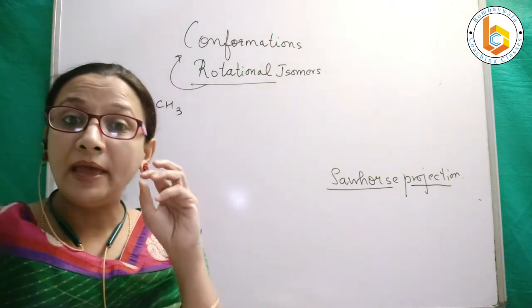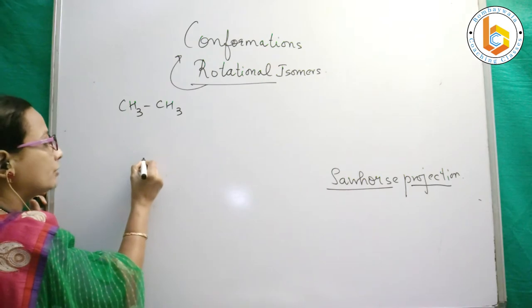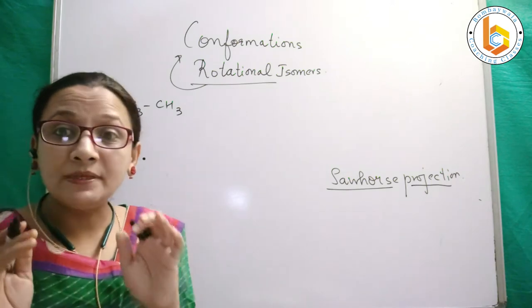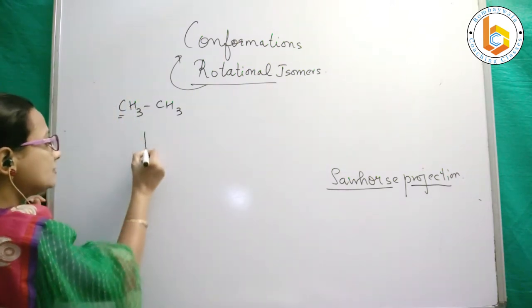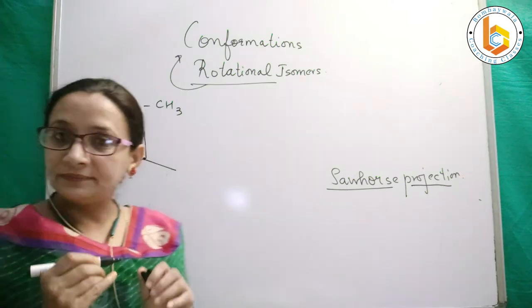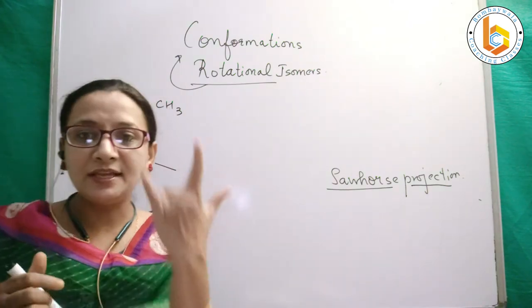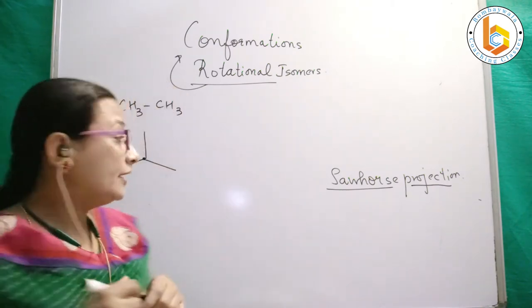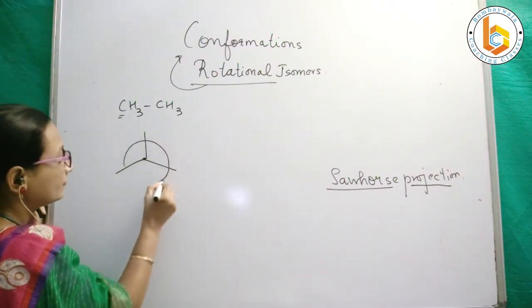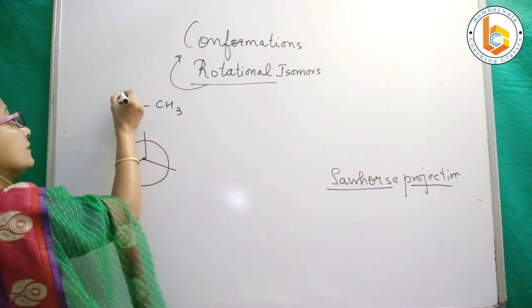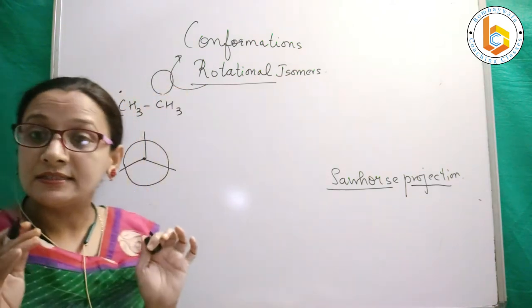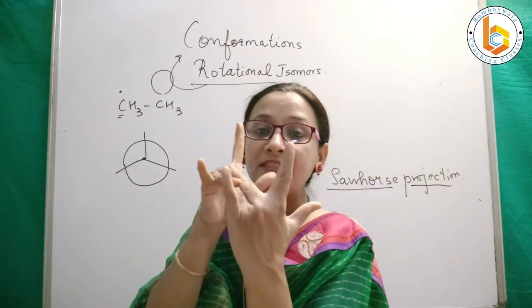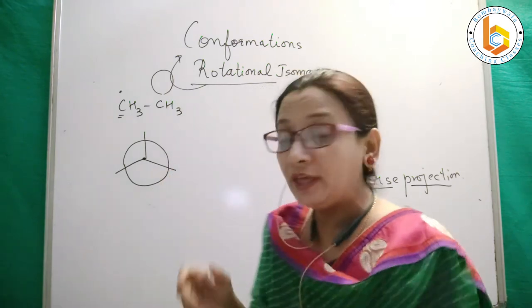The first carbon is represented as a dot. This carbon has three hydrogens attached, which we represent as three intersecting lines. The first carbon, as per Newman projection, is represented as a circle—actually, the first carbon is represented as a dot.